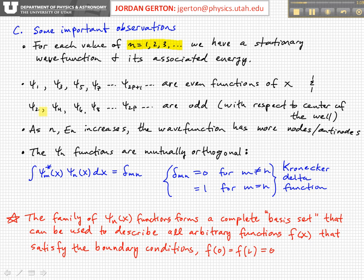And conversely, those wave functions that have even integers, even quantum numbers, n equals 2, 4, 6, 8, etc., are odd. That means they're anti-symmetric with respect to the center of the potential well.